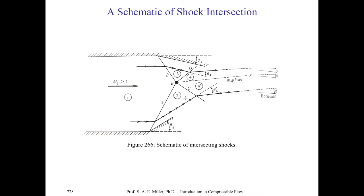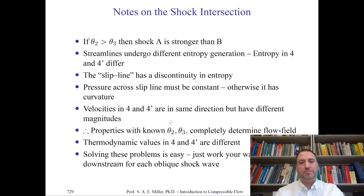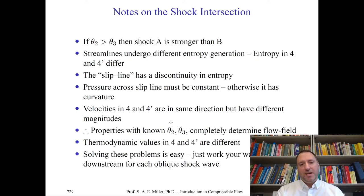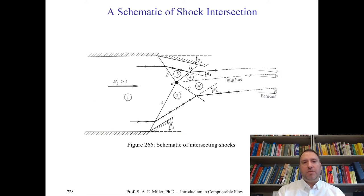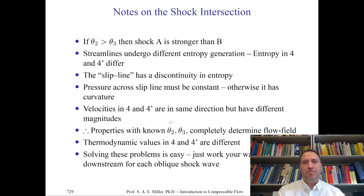We march from cell to cell, shock cell to shock cell. This forms its own shock cell structure or system of shocks inside the duct. Finally, remember the thermodynamic values in 4 and 4 prime are different except for the static pressure across the slip line. These problems are easy to solve if you remember the physics — it's the exact same set of theta-beta-Mach number equations as we march downstream the flow.